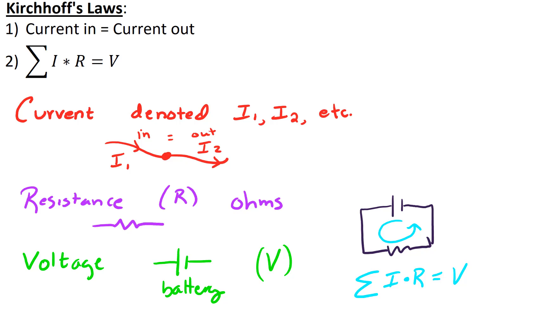Now what we mean by current, when we have a junction, we have current coming in, and we usually denote current with I1, I2, and so forth. So if you have I1 coming in, that's got to equal I2 going out. So current in equals current out.